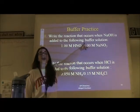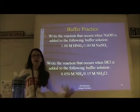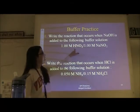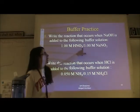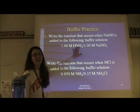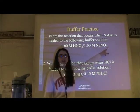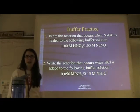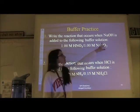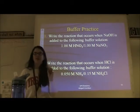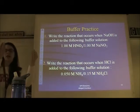Let's review how to recognize a buffer system in the first place. HNO₂ is a weak acid — don't confuse it with HNO₃, which is nitric acid; this is nitrous acid. The salt NaNO₂ shares NO₂ with the acid. The nitrite ion NO₂⁻ is the conjugate base of that weak acid. A buffer has a weak acid and its conjugate base present at the same time in the same container.